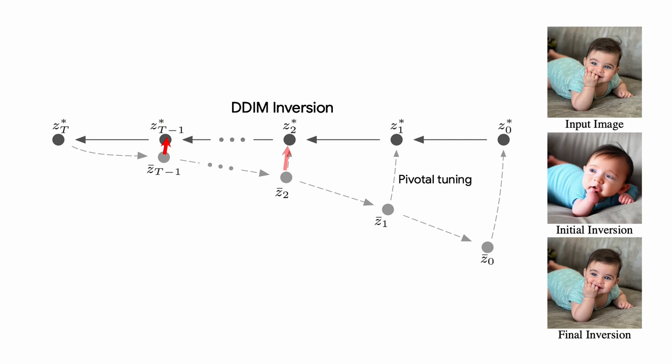So we start with zt and for each timestamp try to get as close as possible to the pivot trajectory. In other words, we perform optimization for each timestamp where the pivot is the relevant latent code from the DDIM inversion.